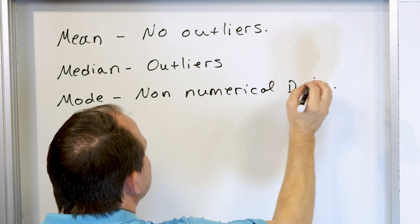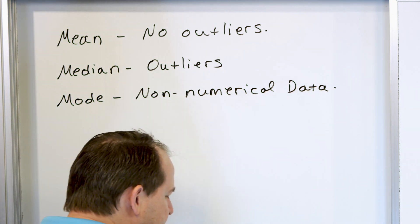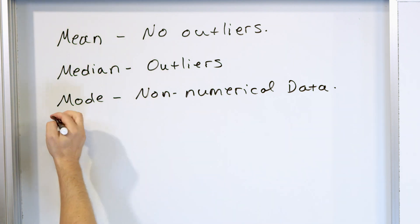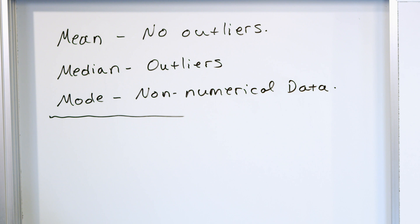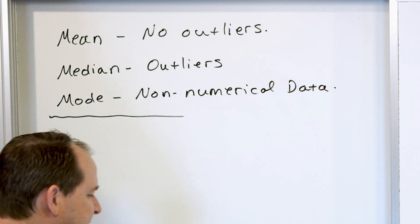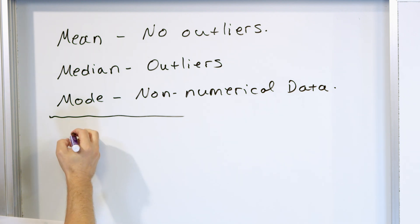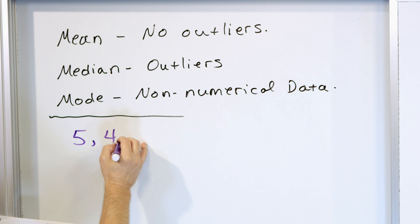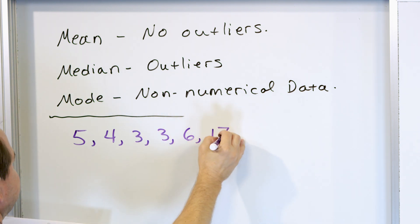Don't worry if you're having a hard time figuring out what non-numerical data is — just give me a few minutes and I will give you an example of that. Let's take a look. You'll learn these very quickly as we actually start looking at some of these problems because they're very practical. Let's say I give you the following data: a five, a four, a three, a three, a six, and a 17.